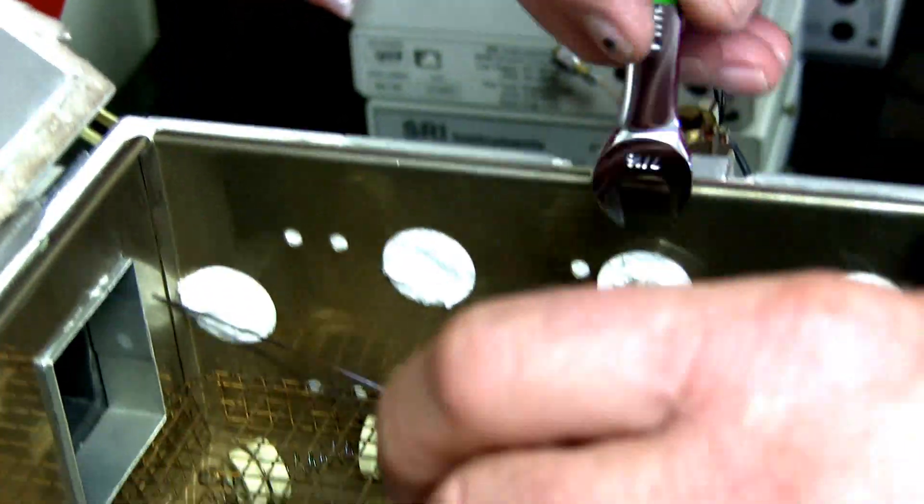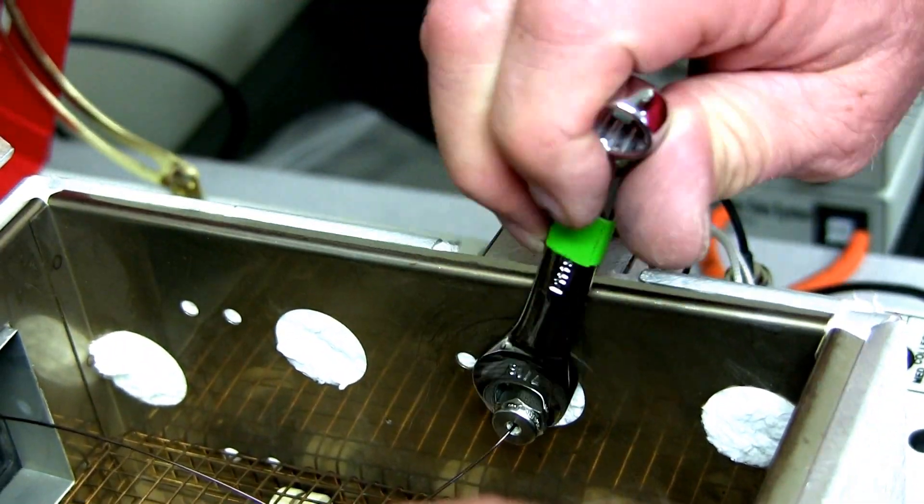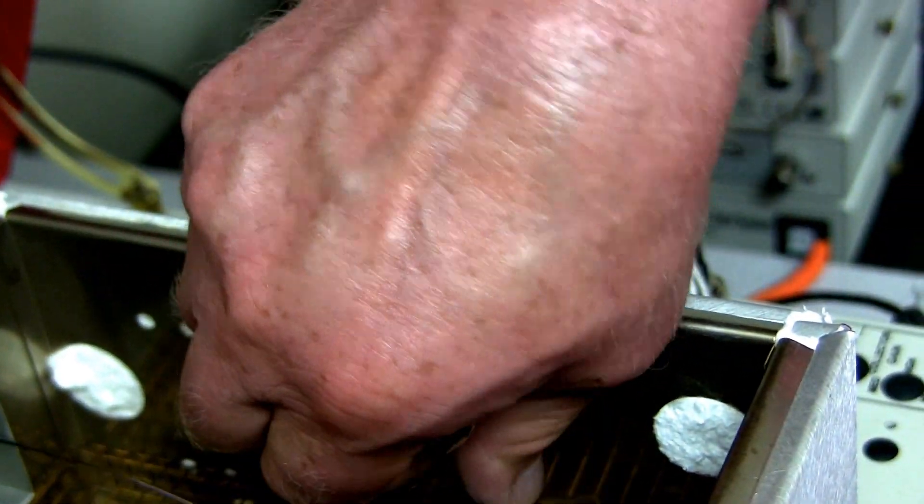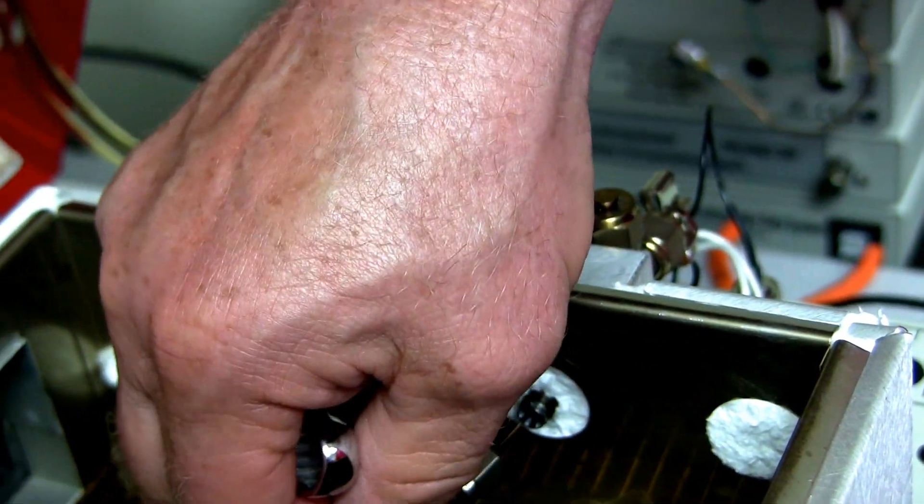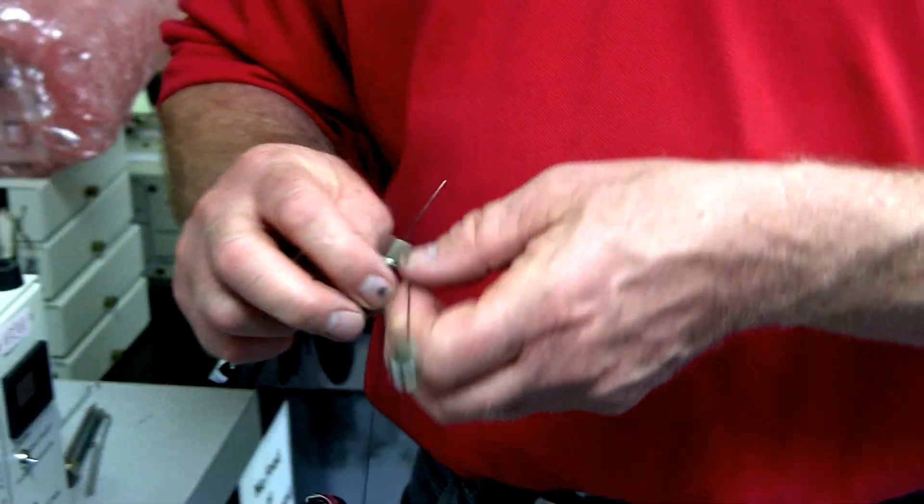Same on the detector side. Loosen the swage lock nut. Could be hot so be careful if it is. And then pull the column out and now the column is completely clear.